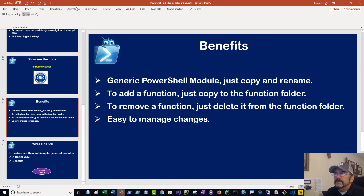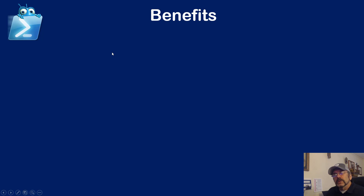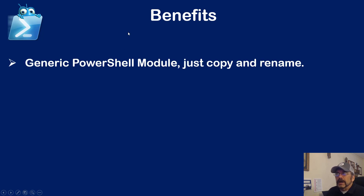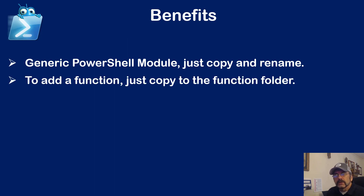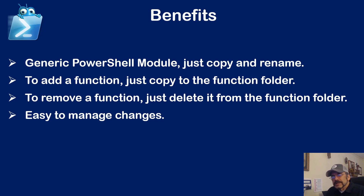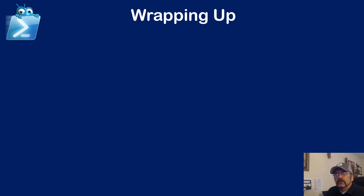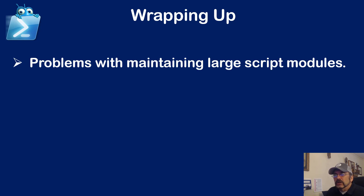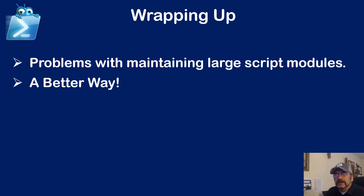Reviewing the benefits of using this technique: I get a generic PowerShell module — just copy it where I need it, rename it. I can add functions just by copying a function file to the folder, remove a function just by deleting it or moving it out of the folder. It makes it really easy to manage changes to the code. And imagine you have a function that's breaking your module — you can just move that one function out for an hour and at least the rest of the module keeps working. So it makes it easy to fix problems too. In summary, we learned that there can be problems maintaining large script files, and the solution is using the dot sourcing technique shown here. Maintainability is really the key — being able to keep things isolated. Parsimony is our new word for the day.